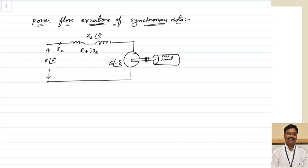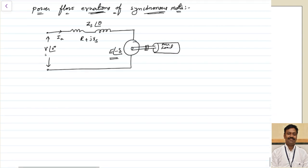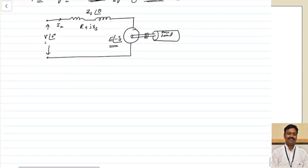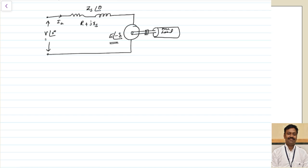If you see the diagram of a synchronous motor, the equivalent circuit can be drawn like this. Taking voltage as the reference, the current is produced by this voltage and passes through Z at an angle of theta. The back EMF generated in the synchronous motor will lag behind the supply voltage by some angle delta, so we write it as E at an angle of minus delta. We have already seen why this delta occurs, so I am not going into details now.